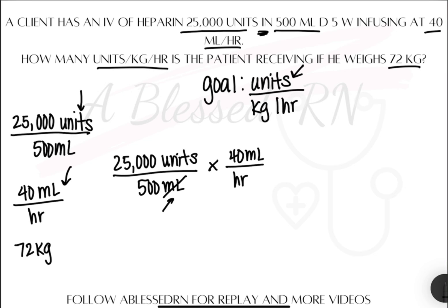What's together stays together. We cross our units out as we go. Now we've got hour at the bottom — that's part of the goal — and units at the top. The only thing left is kilograms. The goal tells you where the puzzle pieces go: because kilograms is on the bottom in the goal, we'll put it on the bottom here. So 72 kilograms goes on the bottom, and instead of putting one on the bottom this time, we'll put it at the top.